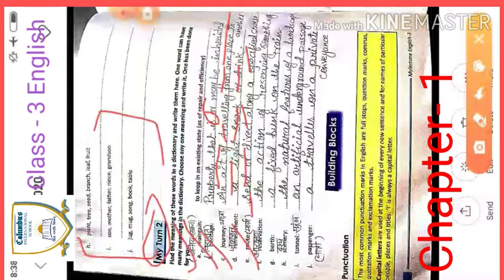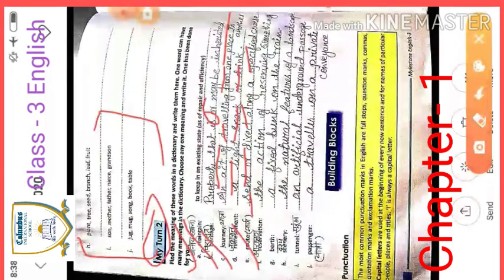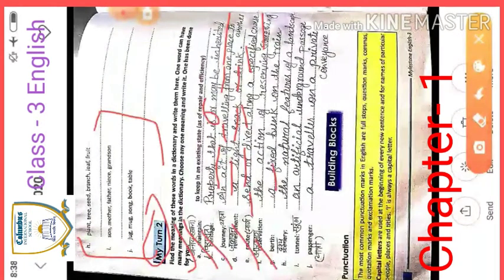Next you have 'route'. Route means a way or a road — 'raasta'. The meaning of this word is: to send along a specified course. Next is 'reservation'. The meaning of reservation is: the action of reserving something — keeping something reserved for yourself, 'kisi bhi cheez ko apne paas reserve karke rakhna'. That is your reservation.